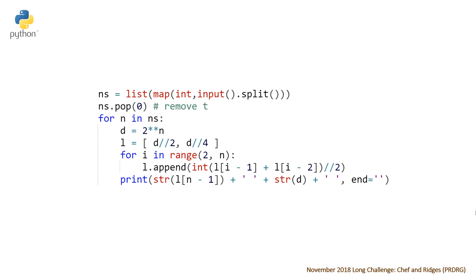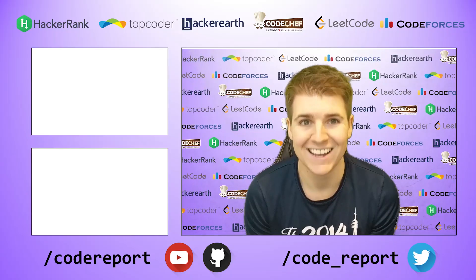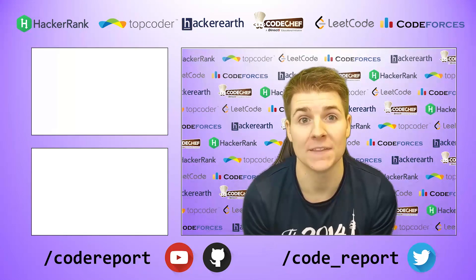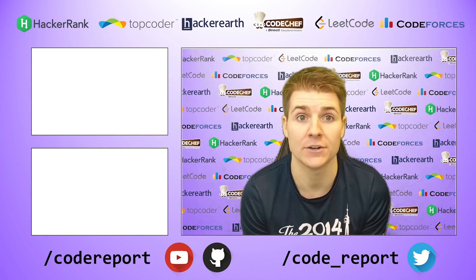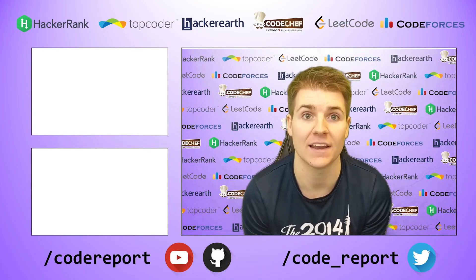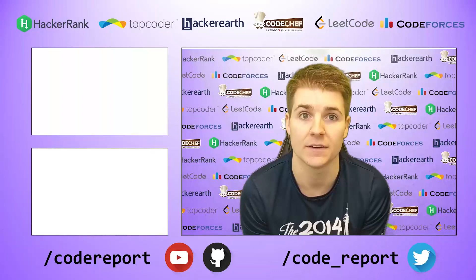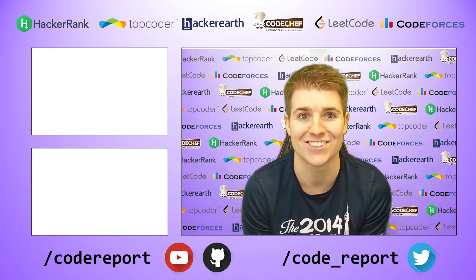These are pretty straightforward solutions to follow. The time complexity for all of them is O(t × n), where t is the number of test cases and n is the length of our array or vector to calculate our numerator. If you enjoyed this video and found it helpful, hit that like button. Subscribe for more, follow me on Twitter for reminders 30 minutes before contest start, and find all the code on my GitHub page. Thanks for watching, and I'll see you in the next video.